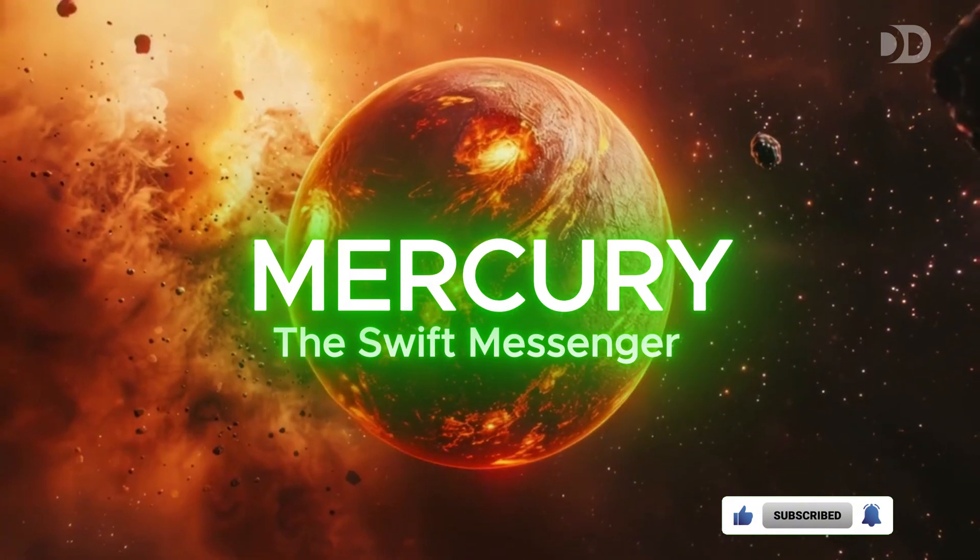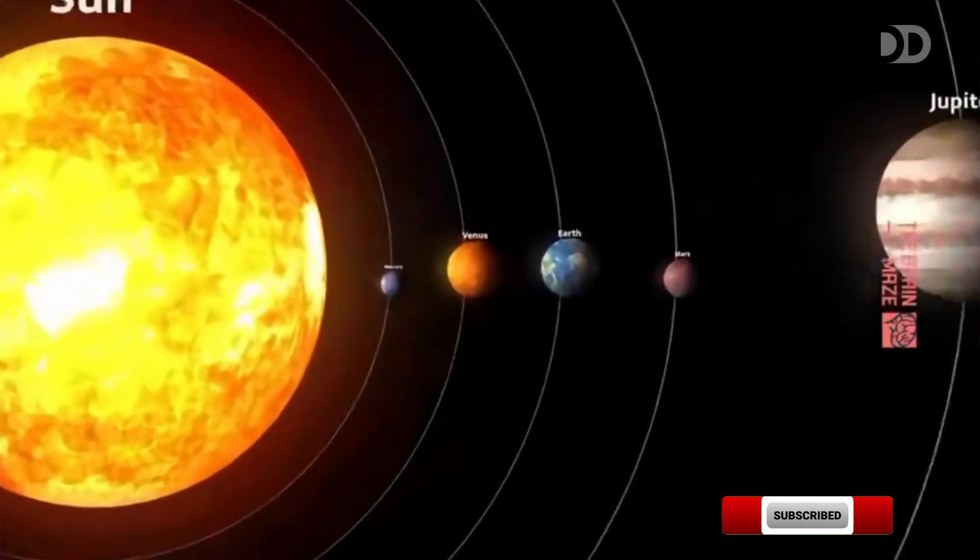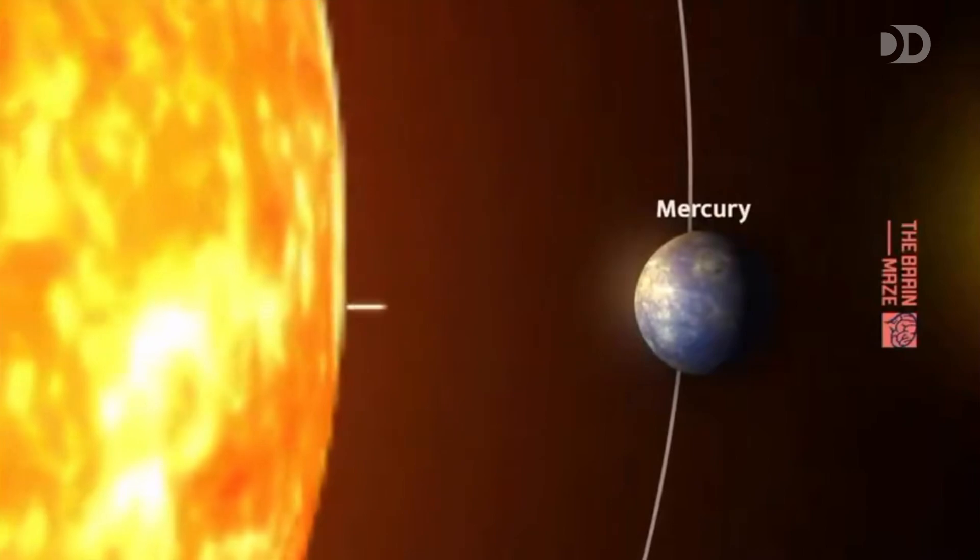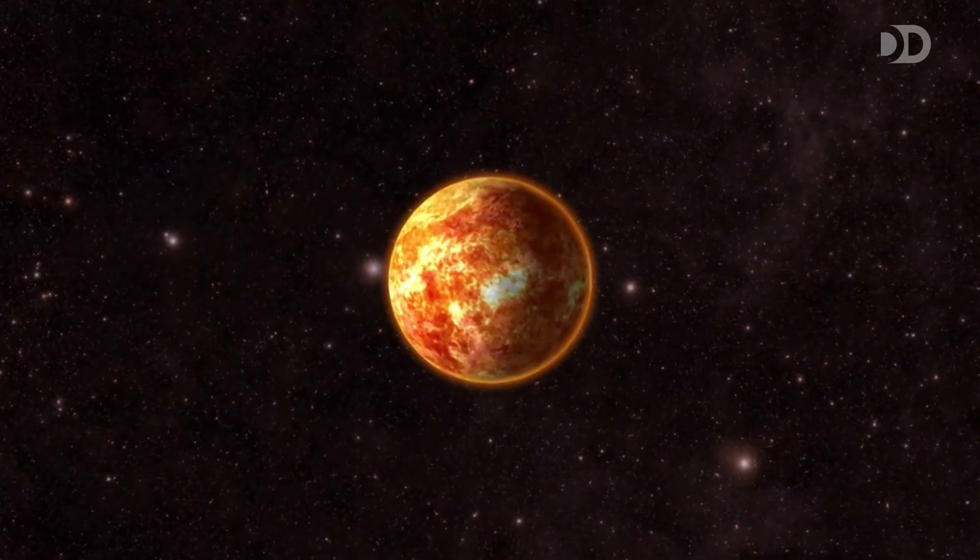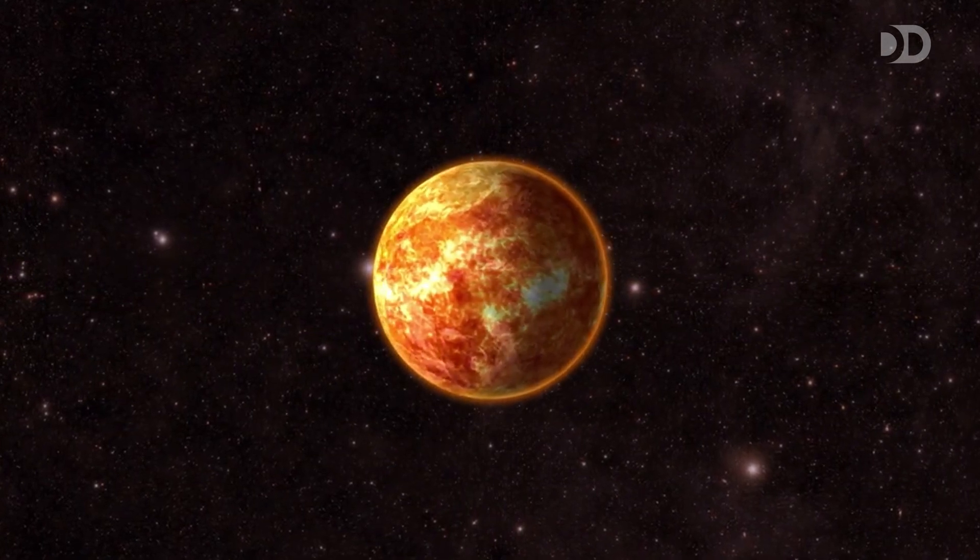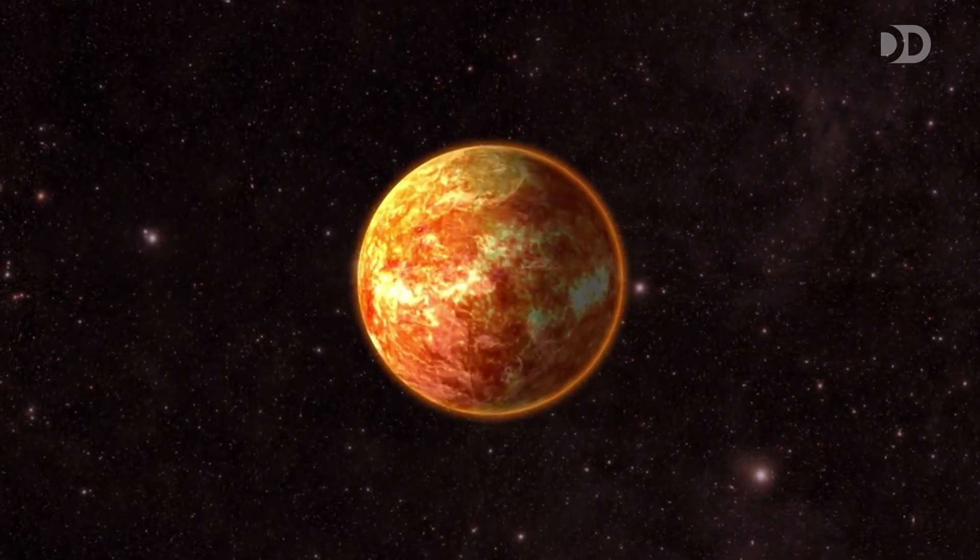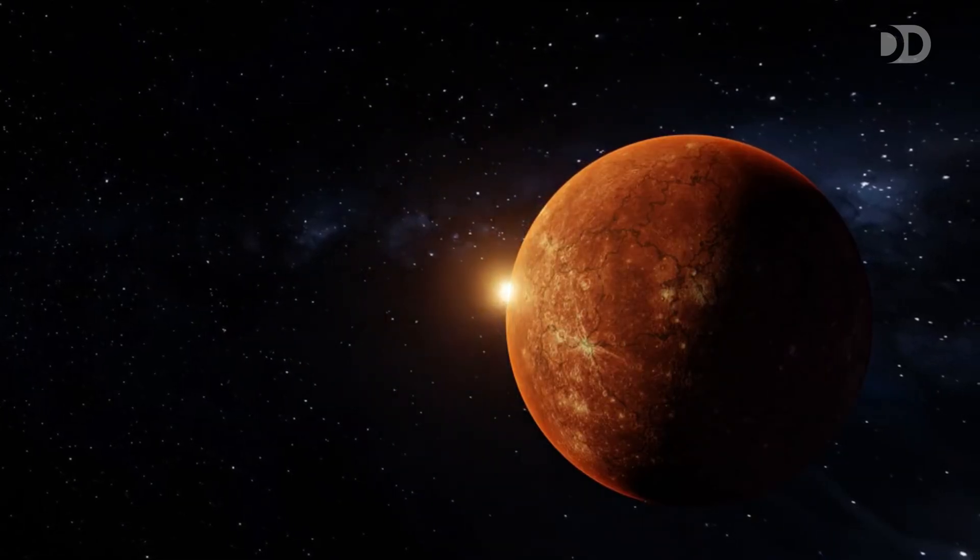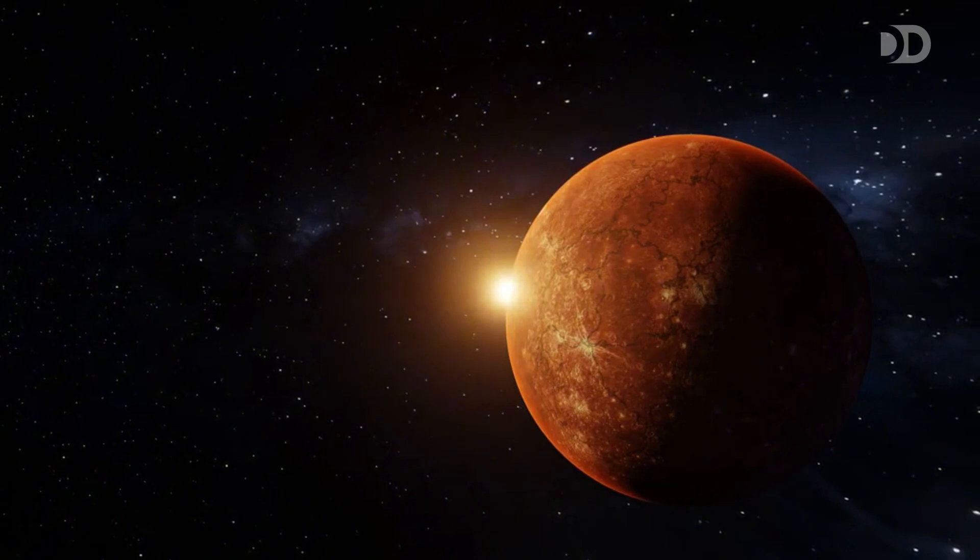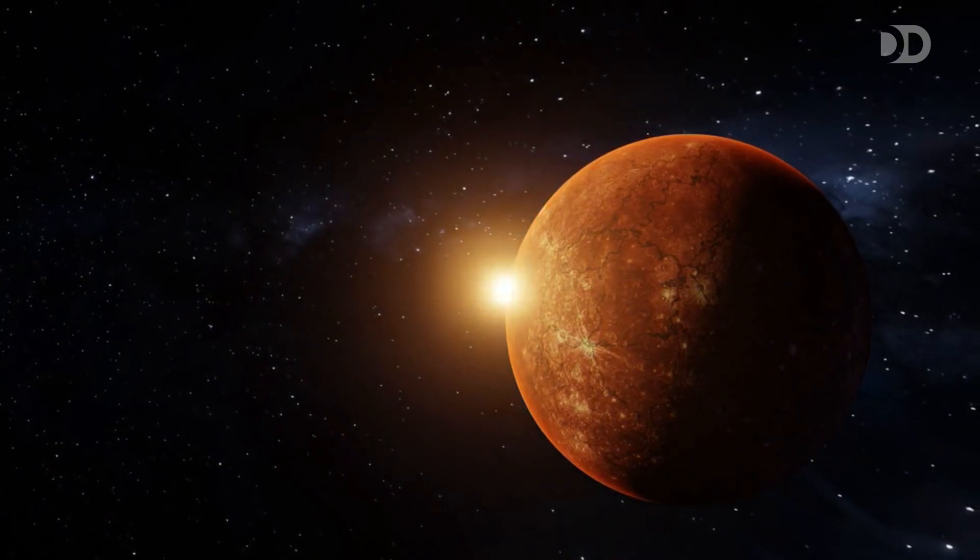Our first stop is Mercury, the smallest planet in our solar system and the one that orbits closest to the Sun. Despite its tiny size, Mercury is a world of extremes and surprises, a place where the rules of our own planet simply don't apply. Mercury hugs the Sun so tightly that from its surface, the Sun appears more than three times larger than it does from Earth.